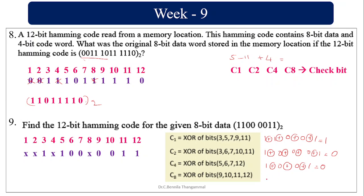C8 covers positions 9, 10, 11, 12: 0 XOR 0=0, XOR 1=1, XOR 1=0. Placing the parity bits C1=1, C2=0, C4=0, C8=0 gives the complete Hamming code.